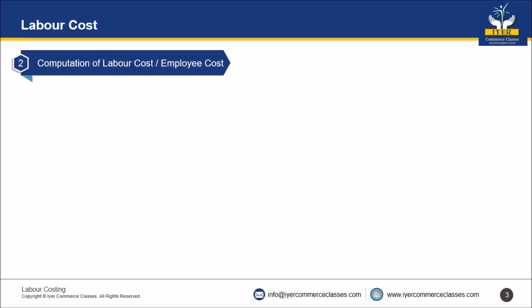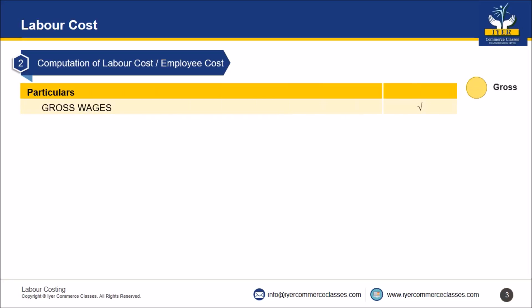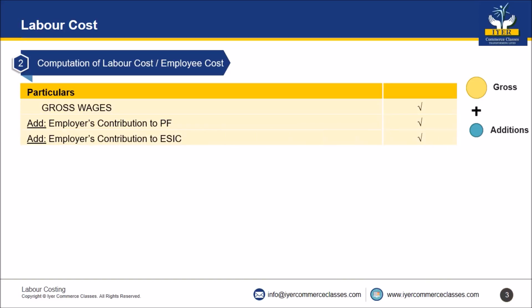Second: computation of labor cost, also called employee cost or wages cost. Start with gross wages, then add employers' contribution to Provident Fund, and add employers' contribution to Employee State Insurance Corporation (ESIC). This gives you the total wages, i.e., the total labor cost.